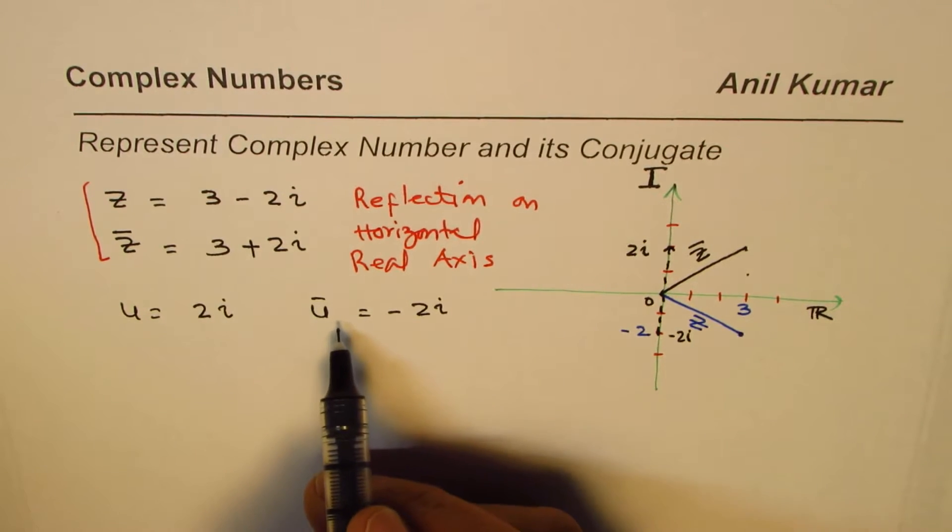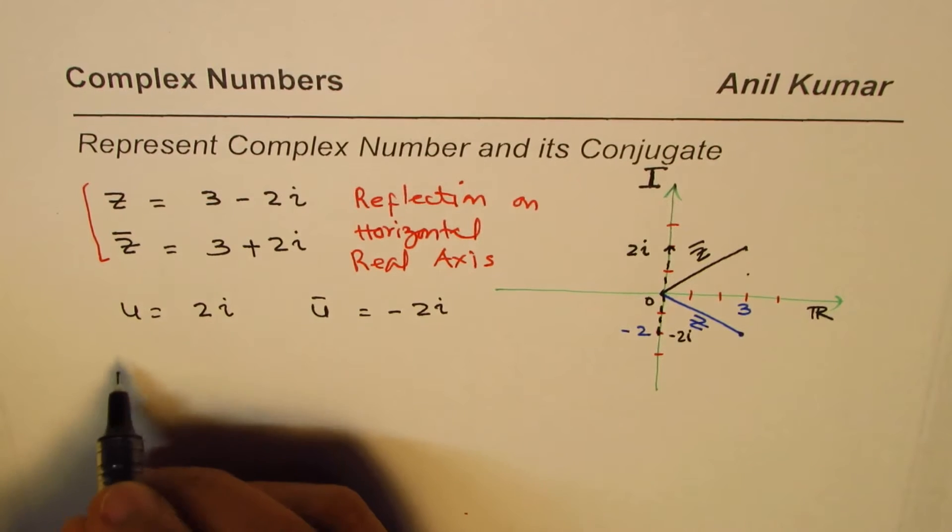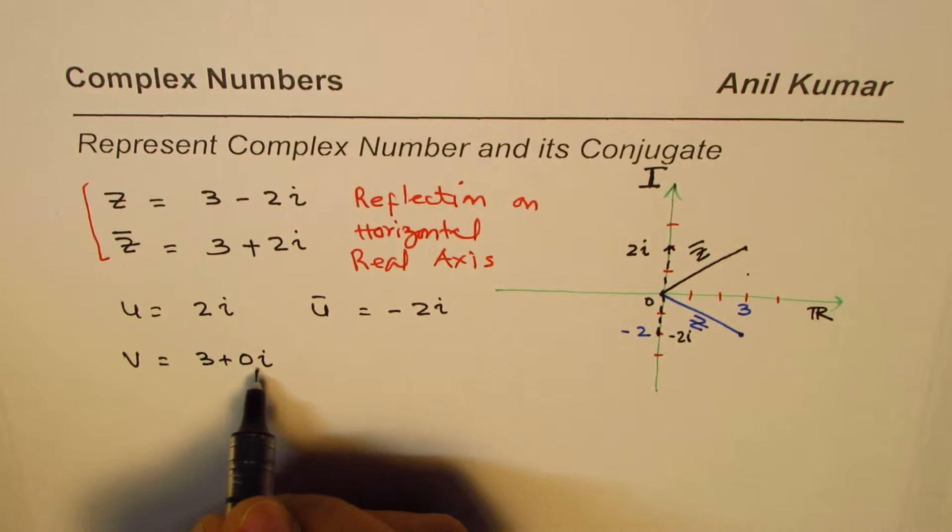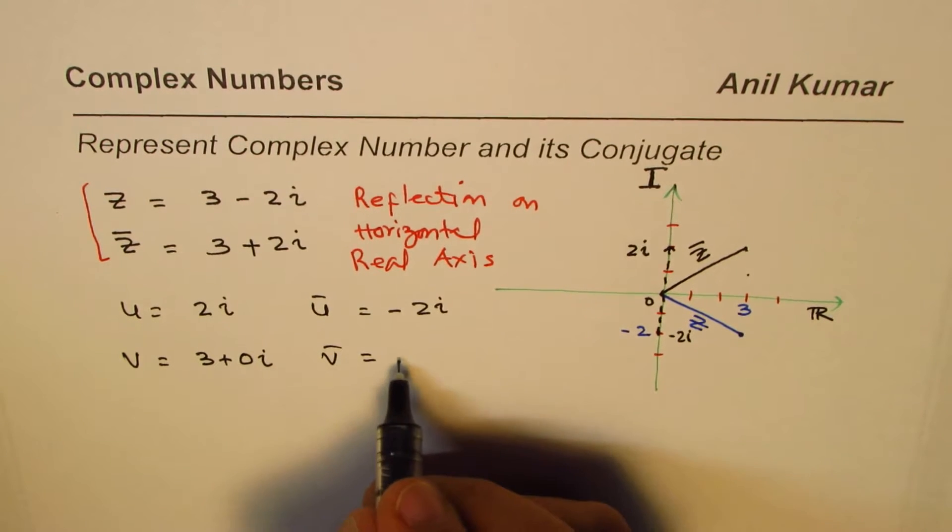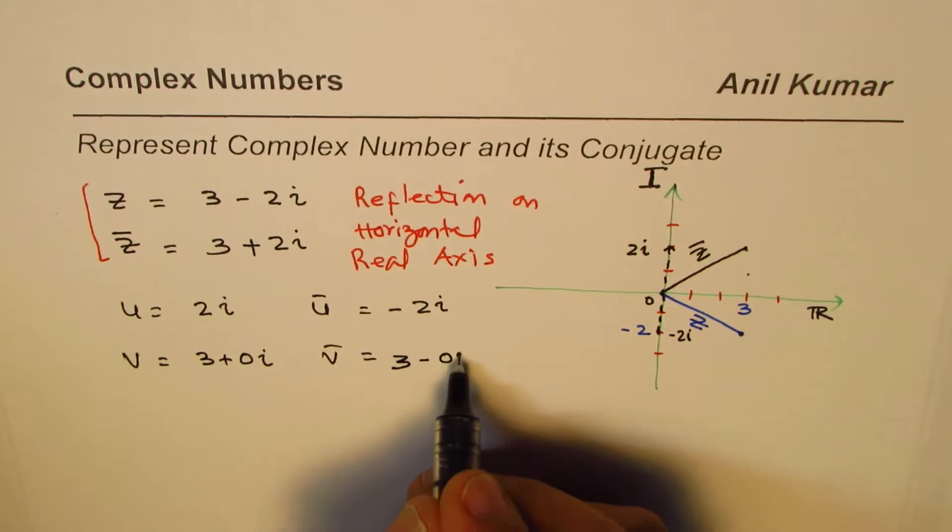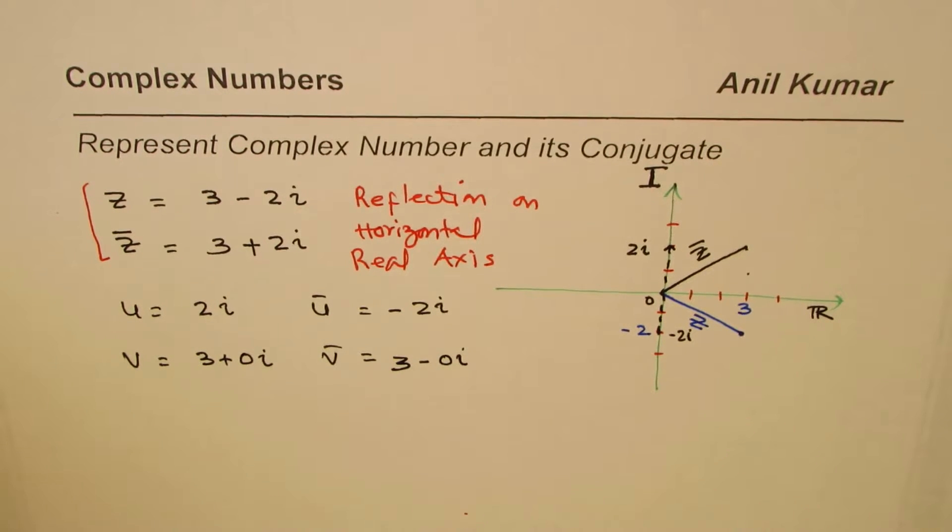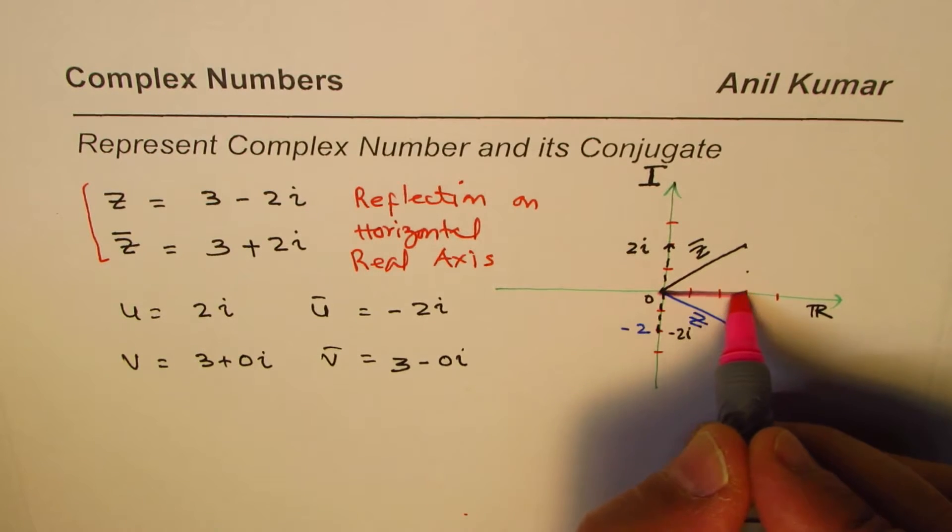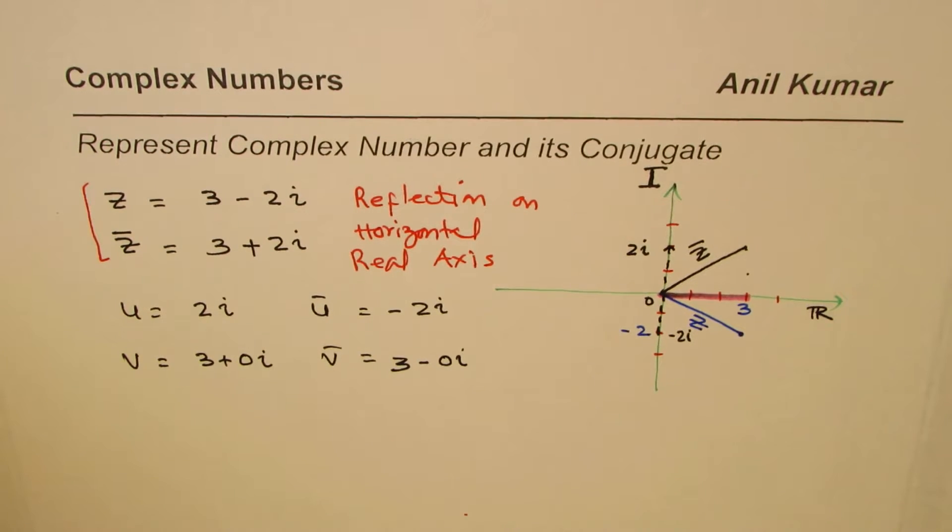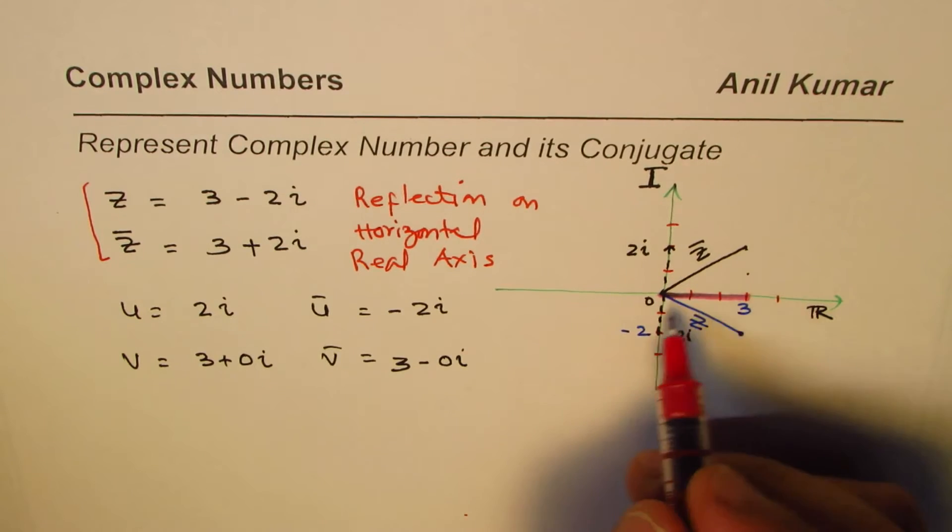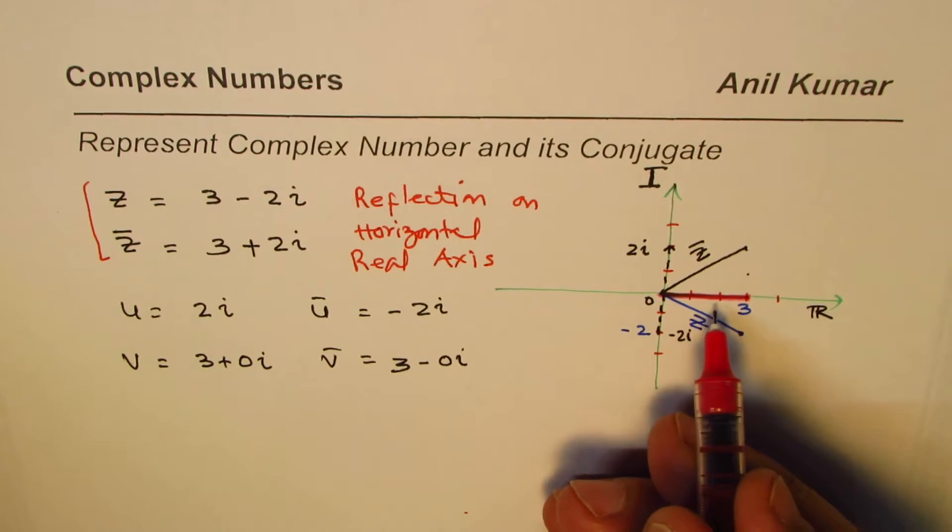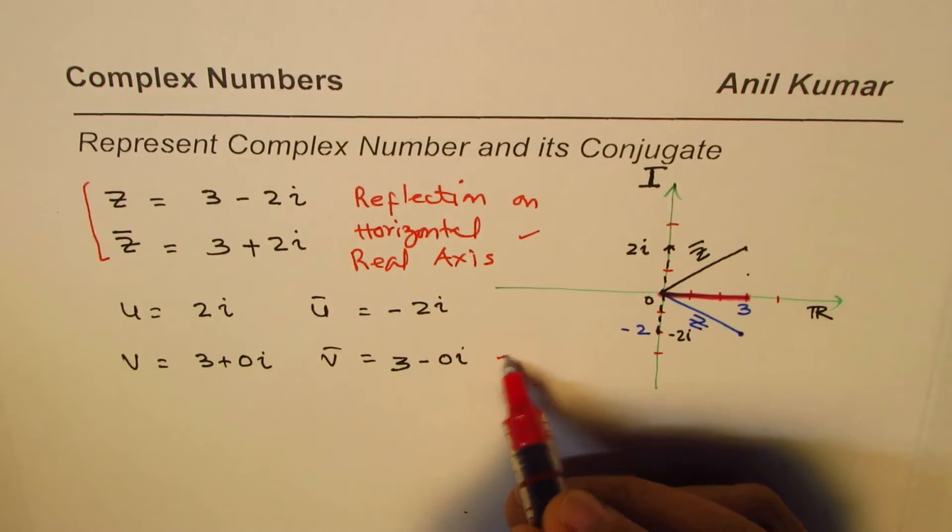If I take just a real part, what happens? Interesting. If I take vector v as 3 + 0i—no need to write that, but I'll do it purposely—in that case, the conjugate will be 3 - 0i. But that doesn't make a difference. So in this case, the vector will be at 3 on the real axis. It's going to be the same. Reflection on the real axis, you get the same point. So mirror image, reflection along the real axis—it works.